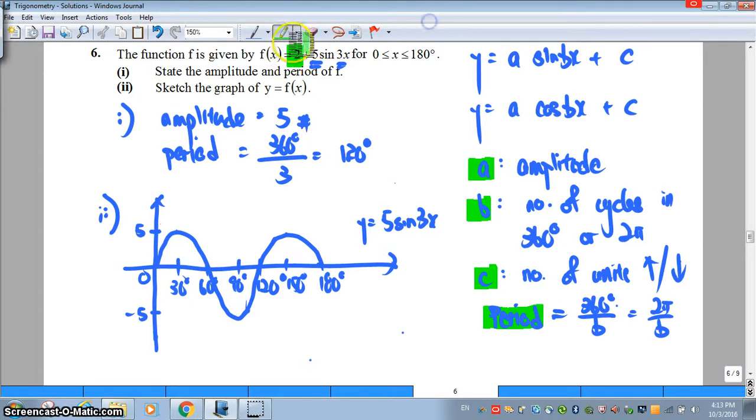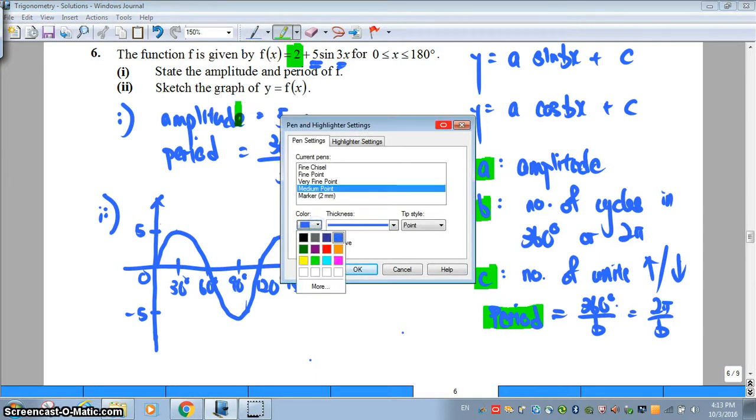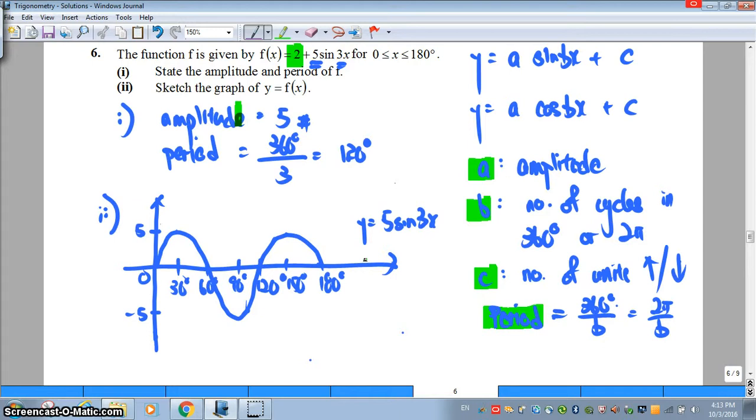This is the curve y equals 5 sine 3x. Remember, there is a positive 2 here. What does the positive 2 tell you? It means the whole graph is going to shift up by another 2 units. Every single point that you indicated has to shift up by 2.